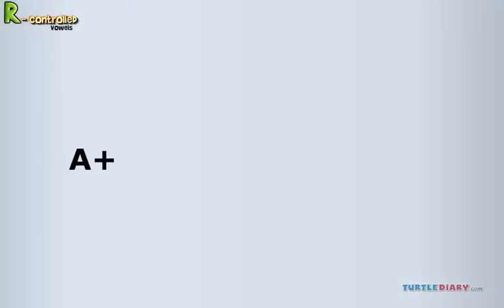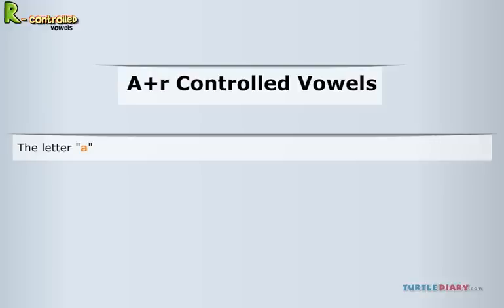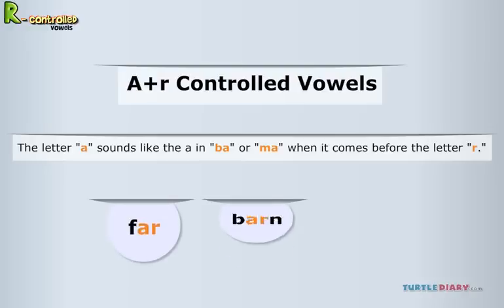A plus R, controlled vowels. The letter A sounds like the A in ba or ma when it comes before the letter R. You can hear this sound best in the words far, barn, and tar.